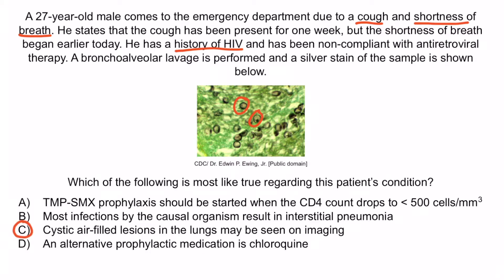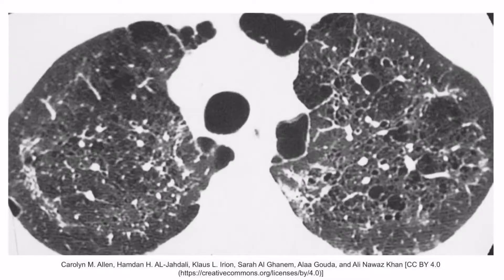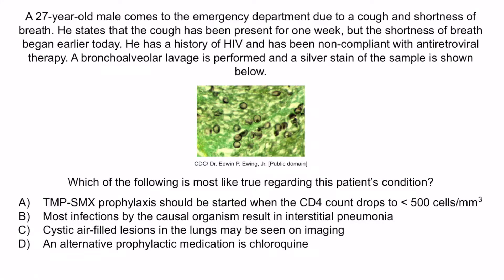With this in mind, the correct answer is C: cystic air-filled lesions in the lungs may be seen on imaging. This is describing pneumatoceles. Recall that the villain's axe is covered with little red spots, and that these resemble pneumatoceles that may be seen on imaging — notice the cystic air-filled cavities throughout the lungs. A is wrong because while TMP-SMX prophylaxis is given to these patients, it's administered when the CD4 count drops to below 200, not 500. B is wrong because while Pneumocystis does cause interstitial pneumonia, most infections are asymptomatic and do not actually cause pneumonia — pneumonia is most often seen in immunocompromised individuals. D is wrong because chloroquine is a medication used for malaria, not Pneumocystis prophylaxis.